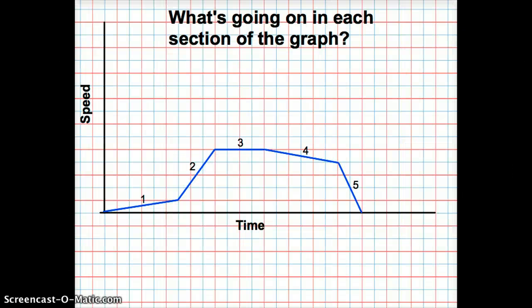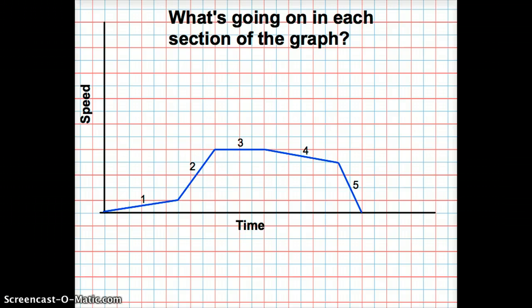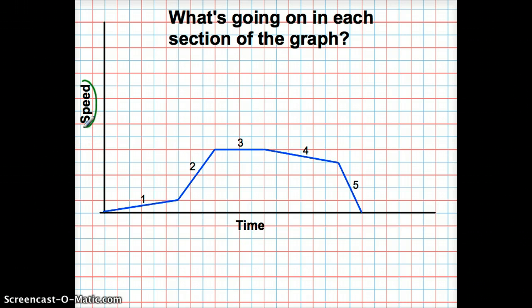We're going to be looking at a graph, and in this particular example I will help you work this one out. I'm asking you what's going on in each section of the graph — there are five different sections happening here. Really important whenever you're trying to figure out what graphs are saying: you need to look at the axes and see what's happening. Here we are relating speed to time.